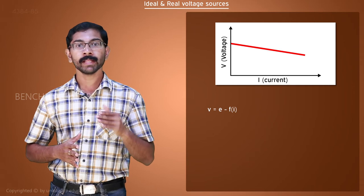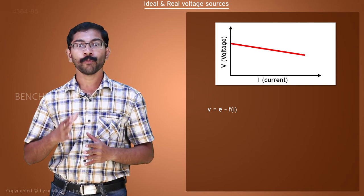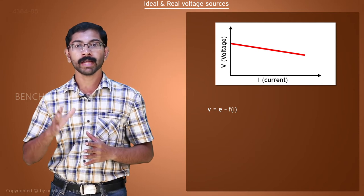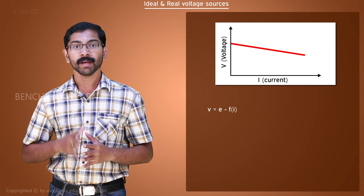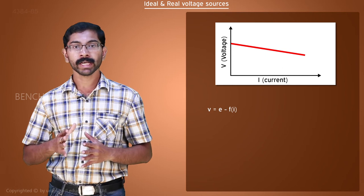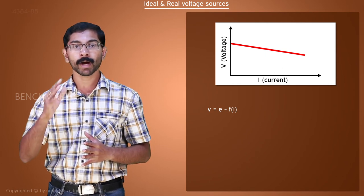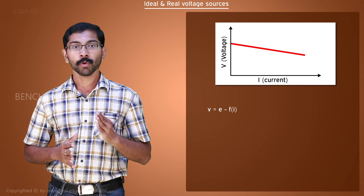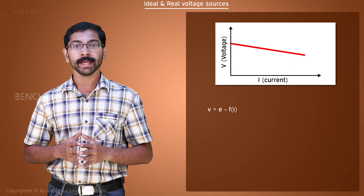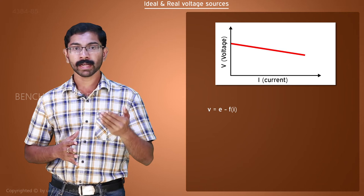To make the equation dimensionally correct, F of I term must have the dimensions of voltage. From Ohm's law, we know that when current passes through a resistor, a voltage drop appears across it. So, we can consider F of I as the product of a current and a resistor.